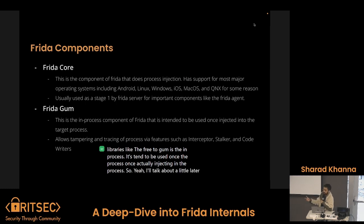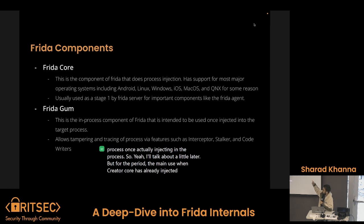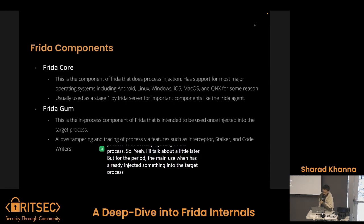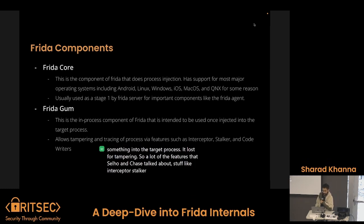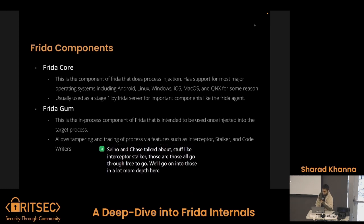Frida Gum is mainly used when Frida Core has already injected something into the target process being tampered with. A lot of the features that Sohail and Chase talked about — stuff like Interceptor, Stalker — those all go through Frida Gum. We're going into those in a lot more depth here, exactly how they work.